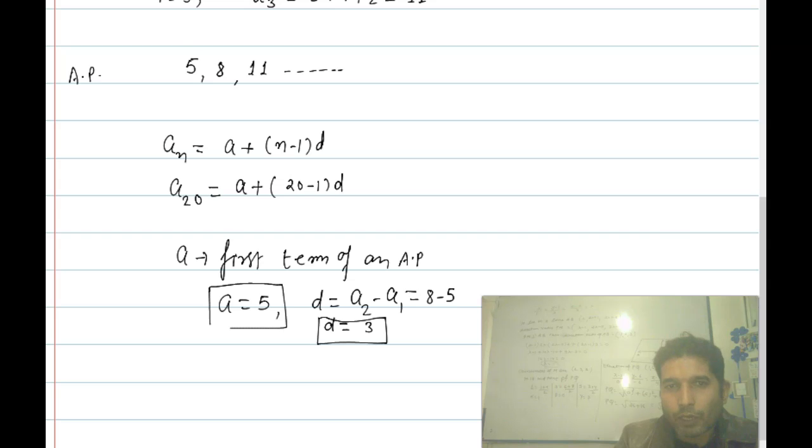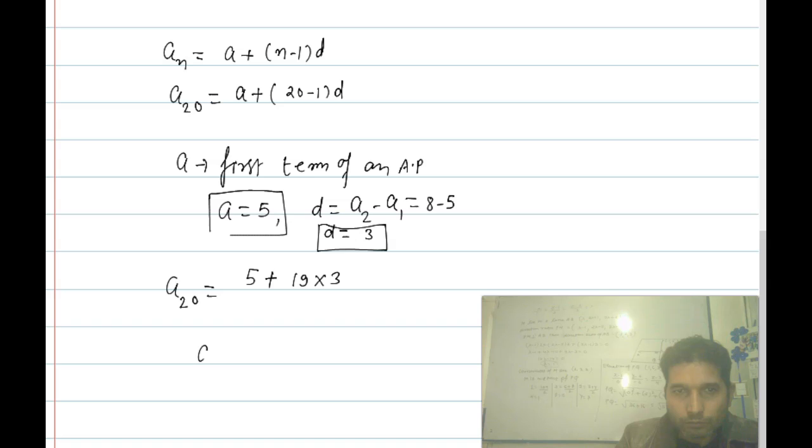So a_20 equals 5 plus 19 times 3. a_20 equals 5 plus 19 times 3, which is 57. So a_20 equals 62.